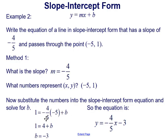We multiply negative 4 fifths times negative 5 to get 4. Subtracting 4 from both sides, we get b equals negative 3. So the equation in slope-intercept form with slope negative 4 fifths passing through (negative 5, 1) is y equals negative 4 fifths x minus 3. That was using the first method, going directly to slope-intercept form.